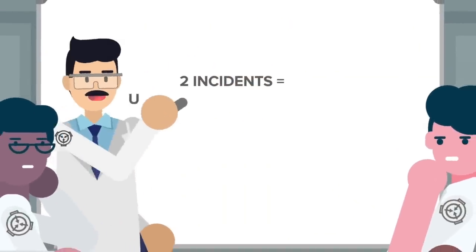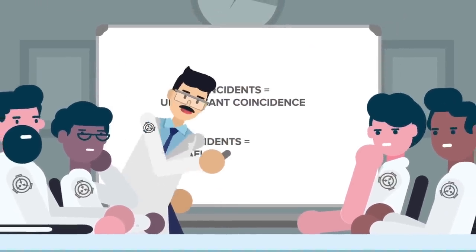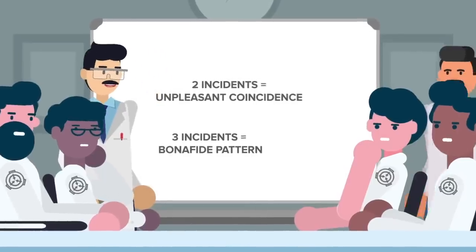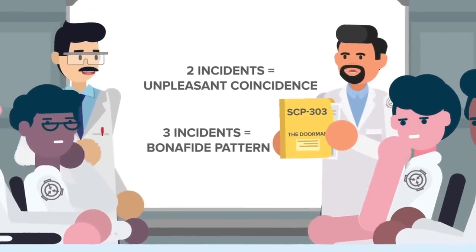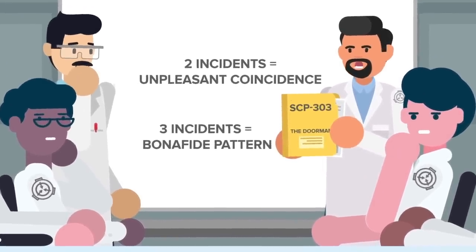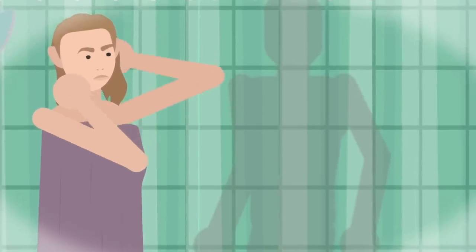Two incidents are an unpleasant coincidence, but three are a bonafide pattern. And it didn't take long for more sightings of this strange new anomaly, dubbed SCP-303, or The Doorman, to pop up across the site. It earned that name by always appearing behind some kind of doorway, or at least a movable divider, in the case of Agent Mendoza's shower curtain.